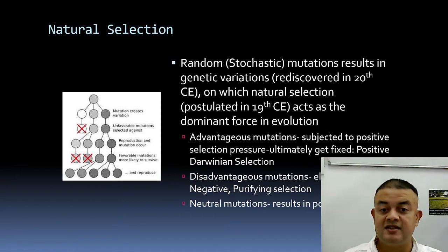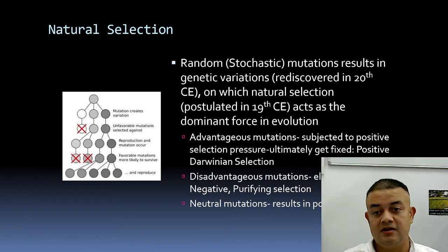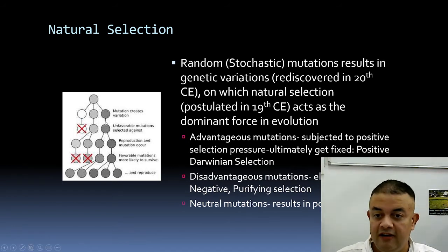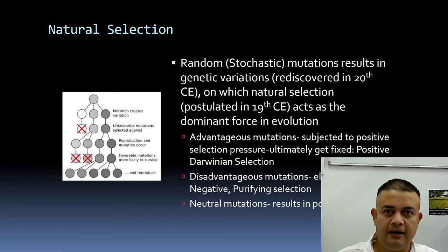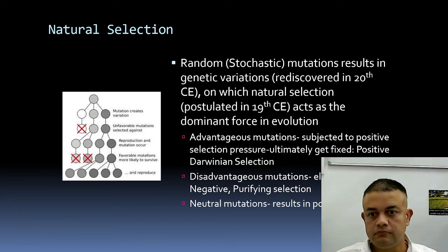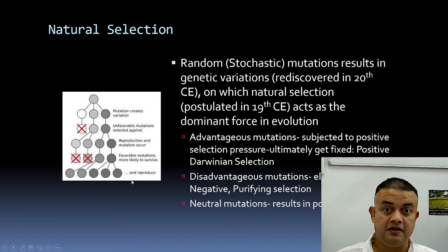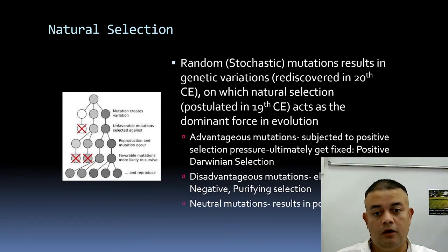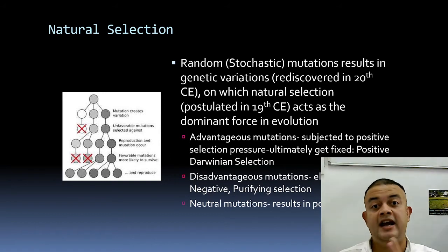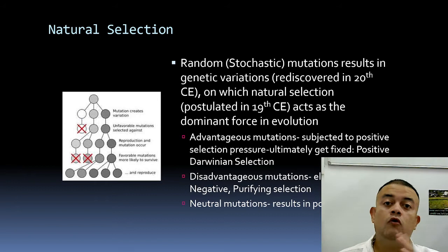Random mutations result in genetic variation, rediscovered by Hugo de Vries in the 20th century, on which natural selection acts as a dominant force. For example, a mutation creates variation — like the Delta variant of coronavirus — a gain of function where the spike protein mutations make the virus far more transmissible. Its frequency increases until it dominates globally. That is natural selection: advantageous mutations subject to positive selection pressure ultimately get fixed.